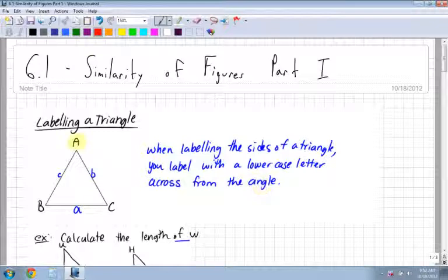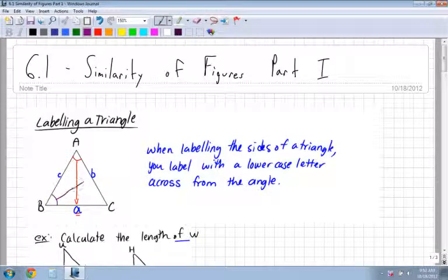For instance, up here we have angle A, and right across from that angle A, we have lowercase a. Here we have angle B, and right across from angle B, we have lowercase b. Similarly for angle C, right across from that angle C, we have lowercase c. Just be aware of how to label your triangles.